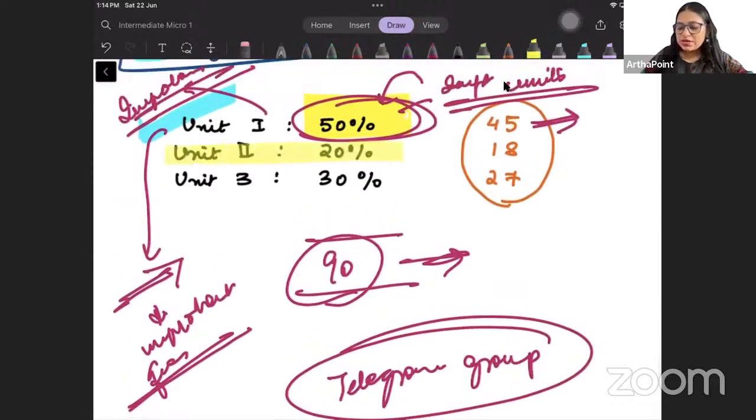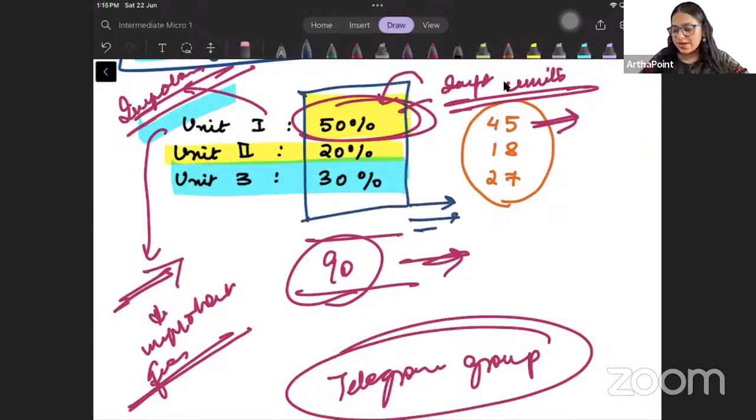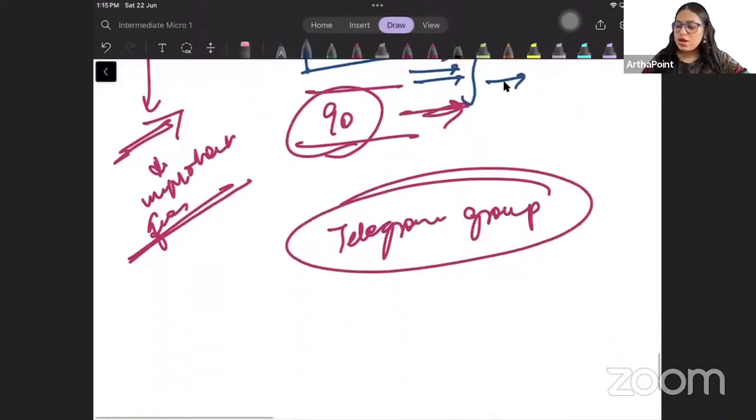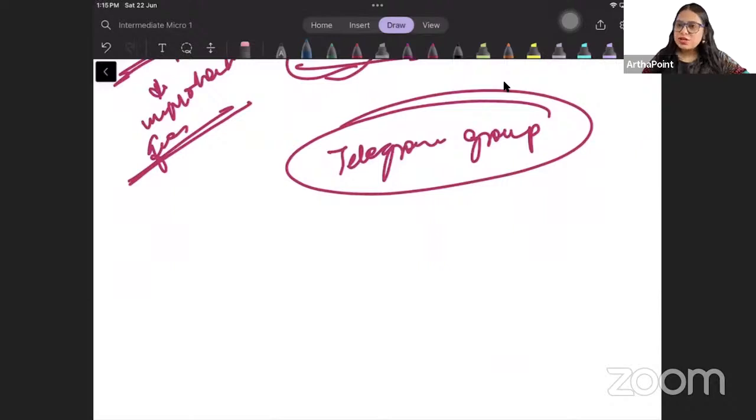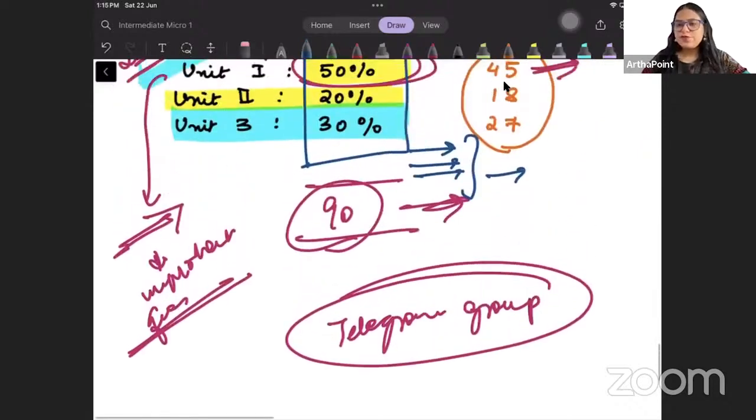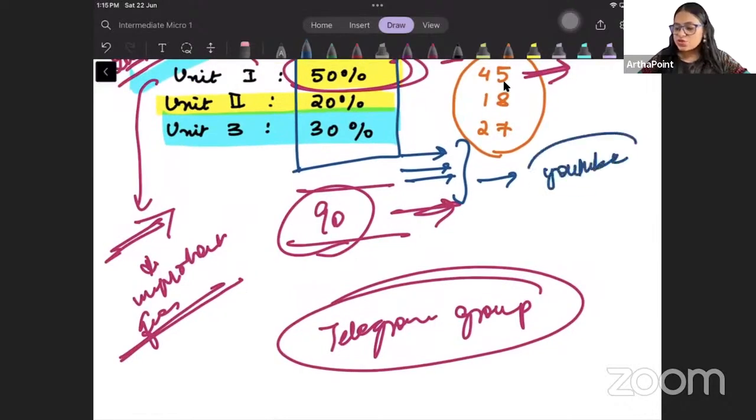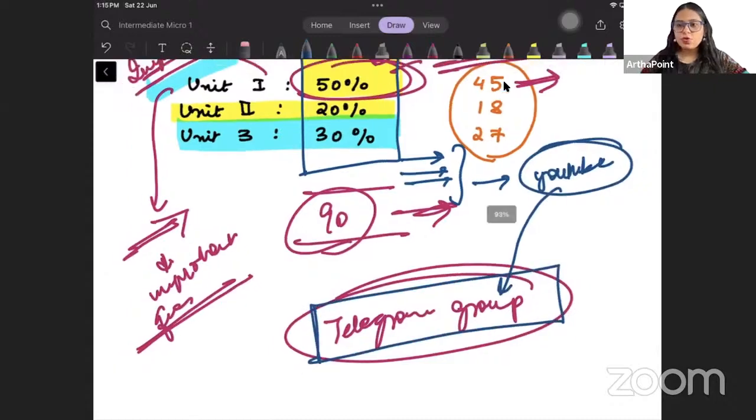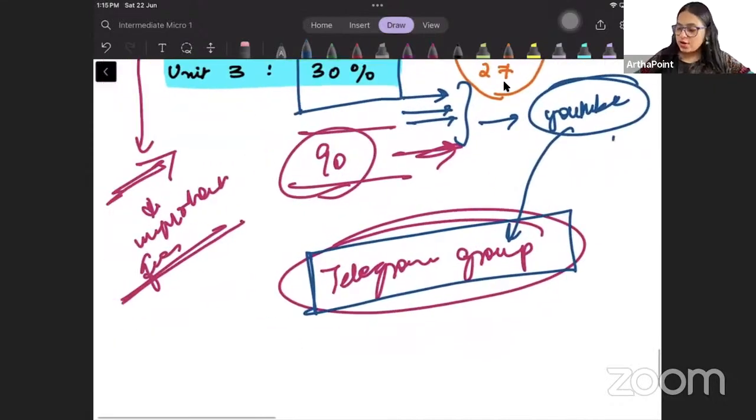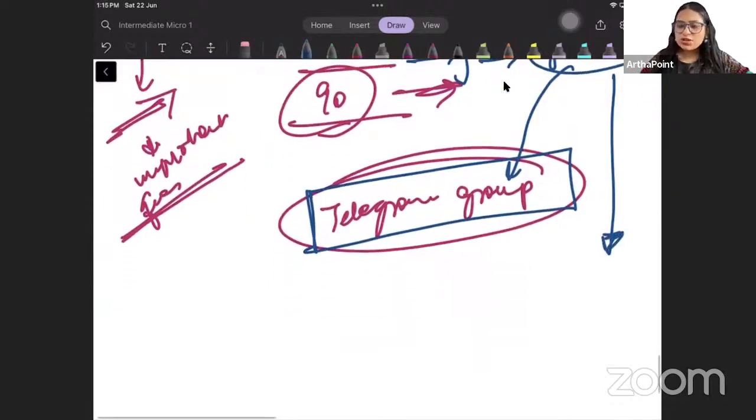Then we will start with unit 2 that is 20% weightage and then unit 3 which has 30% weightage. The entire course will be done in a very structured way. Everything will be very structured but as I told you it is Artha Points initiative. I am not charging a single penny from any student. I want all of you to learn this subject very well. So this will be available absolutely free of cost on YouTube. You can join this group immediately to get all the information about this course.